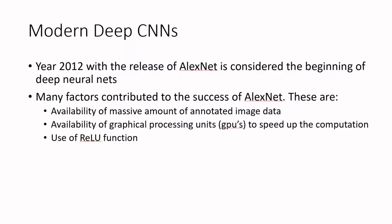Now let's look at modern deep convolutional neural networks. It was in 2012 with the release of AlexNet that people consider the beginning of deep neural networks, as it was the first network with many more layers than what was common up to that point. Several factors contributed to its success and to deep learning thereafter.